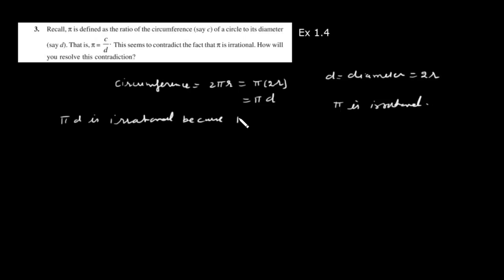Because pi is irrational, that implies that circumference is irrational. So circumference itself is irrational.